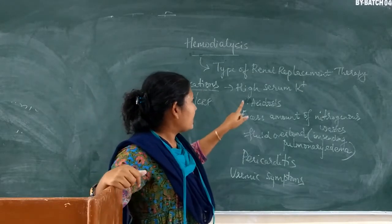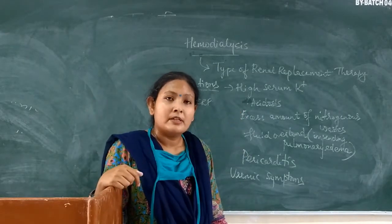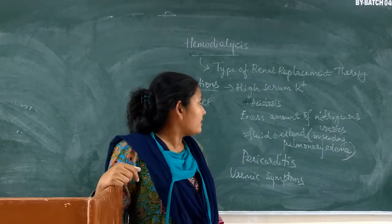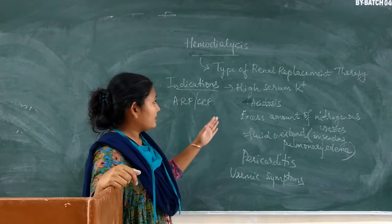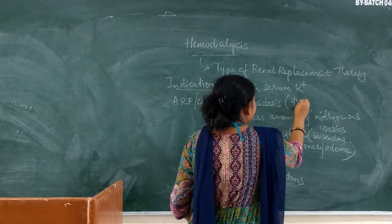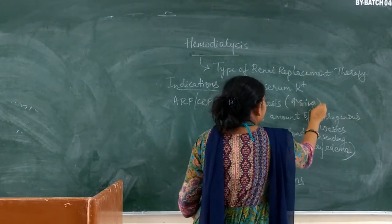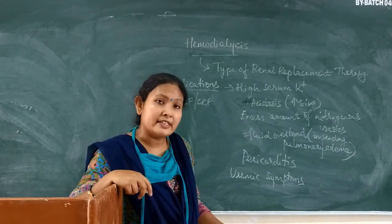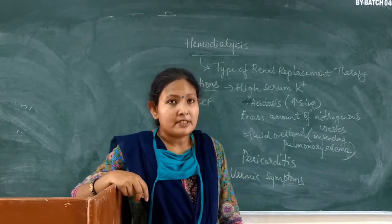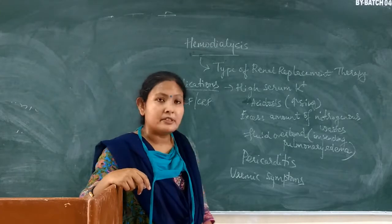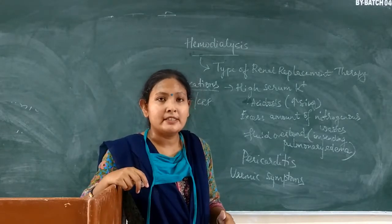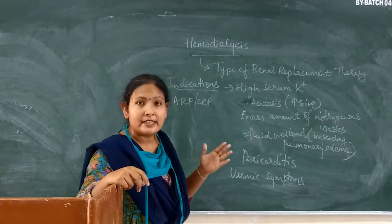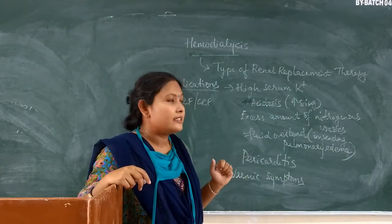The indications are: first, high serum potassium, which is seen in acute kidney injury as well as in chronic renal failure. Second, increasing acidosis — with kidney failure, the body is not able to excrete H+ ions from the body, making the body's environment increasingly acidotic. So to maintain the acid-base balance, hemodialysis is required.